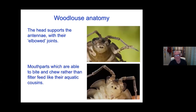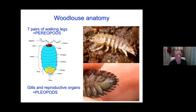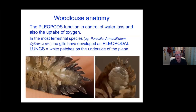There's the head, antennae, mouth parts, and seven pairs of legs each coming from those perion segments. At the rear end, rather than legs, they have what are called pleopods — modified limbs for breathing — as well as osmoregulation and reproduction, with gills underneath.